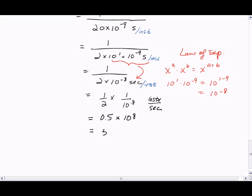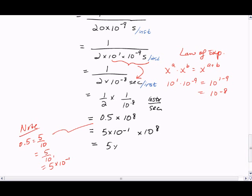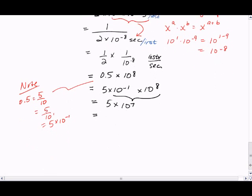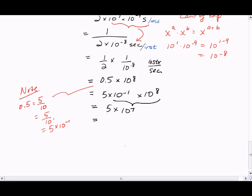So now 1 half simplifies to 0.5 and 1 over 10 to the minus 8 simplifies to 10 to the 8. Let's rewrite our 0.5 as 5 times 10 to the minus 1 times 10 to the 8, which equals 5 times 10 to the 7 using the law of exponents. So there are many different ways of manipulating your numbers so that we get something that is convenient to express.